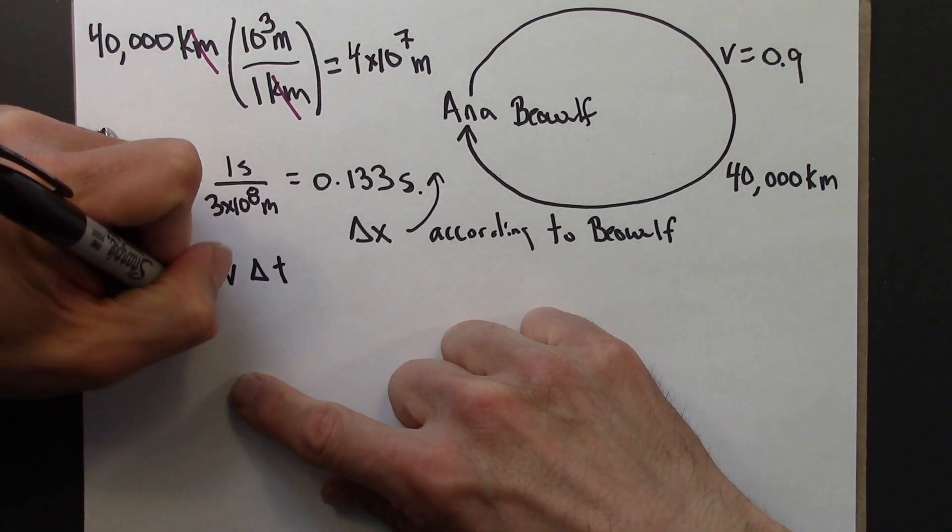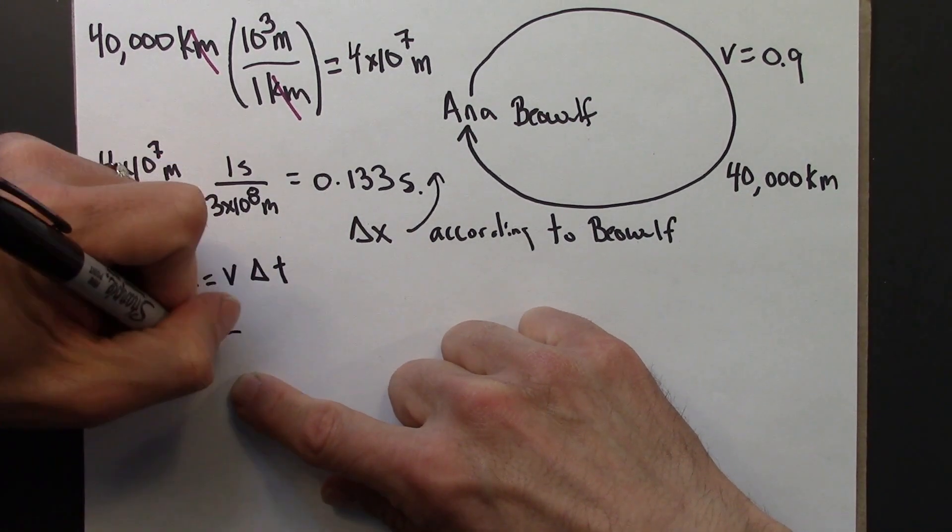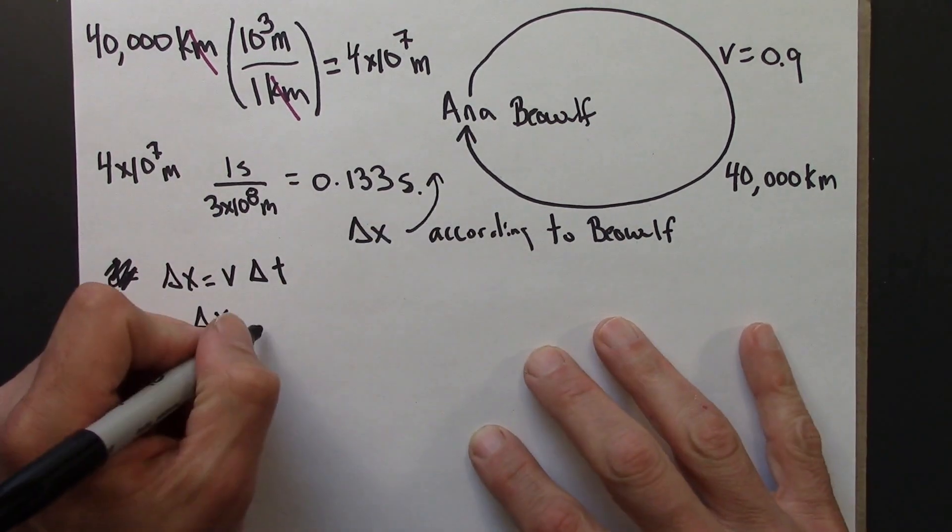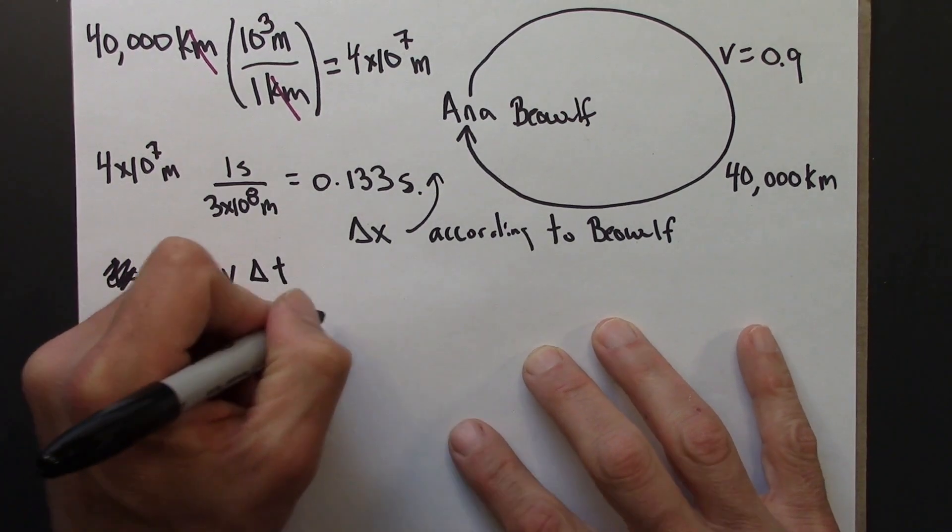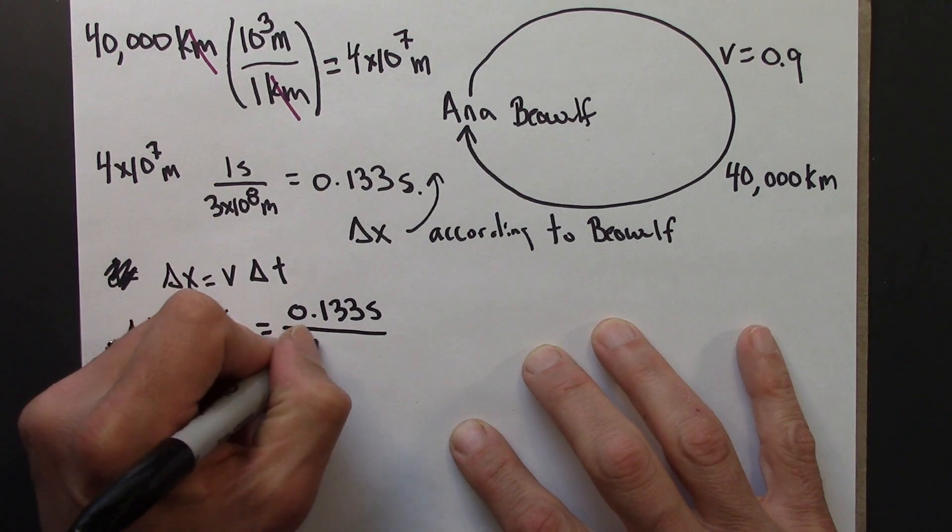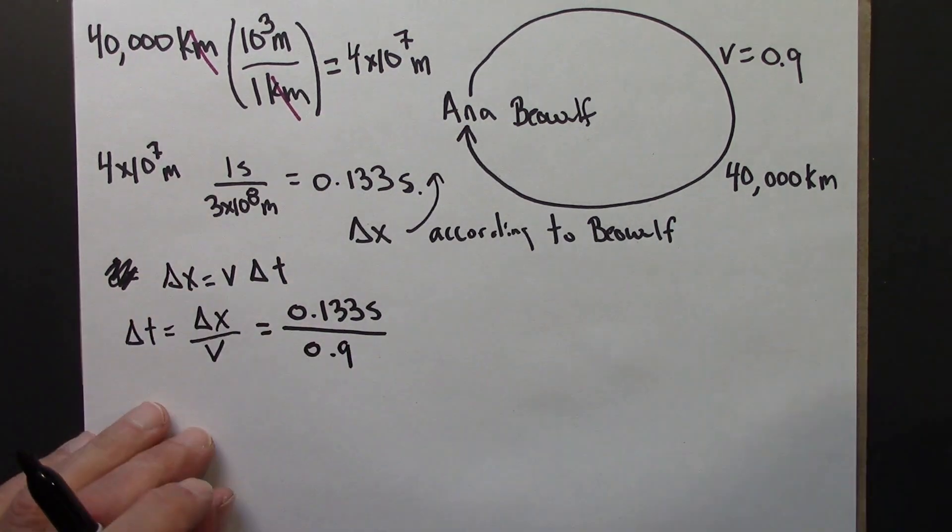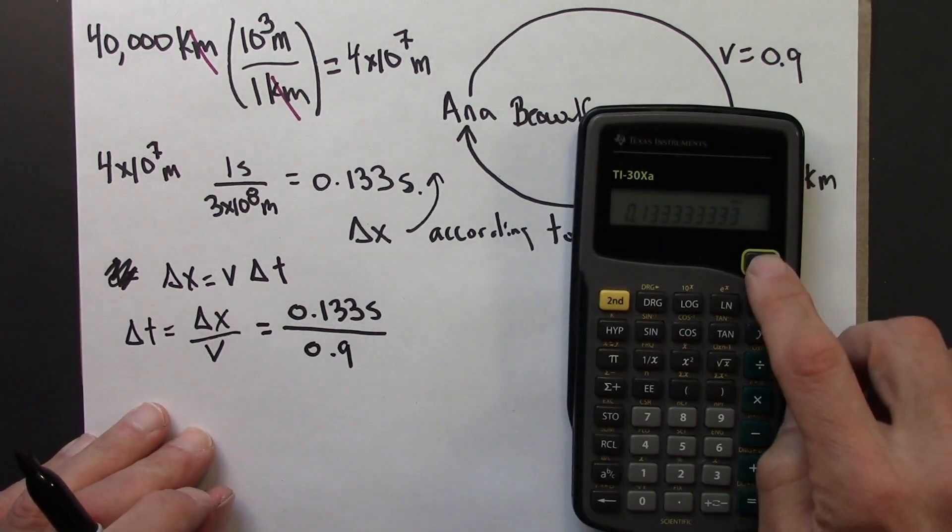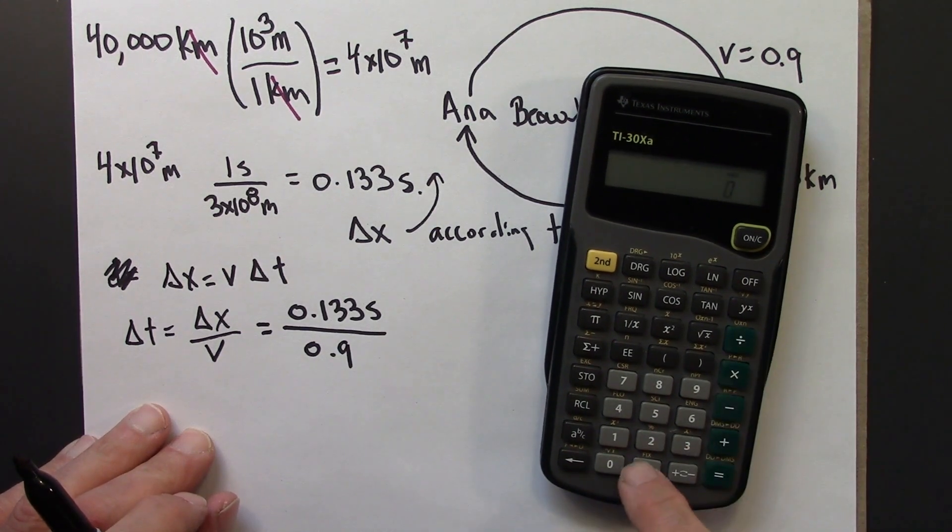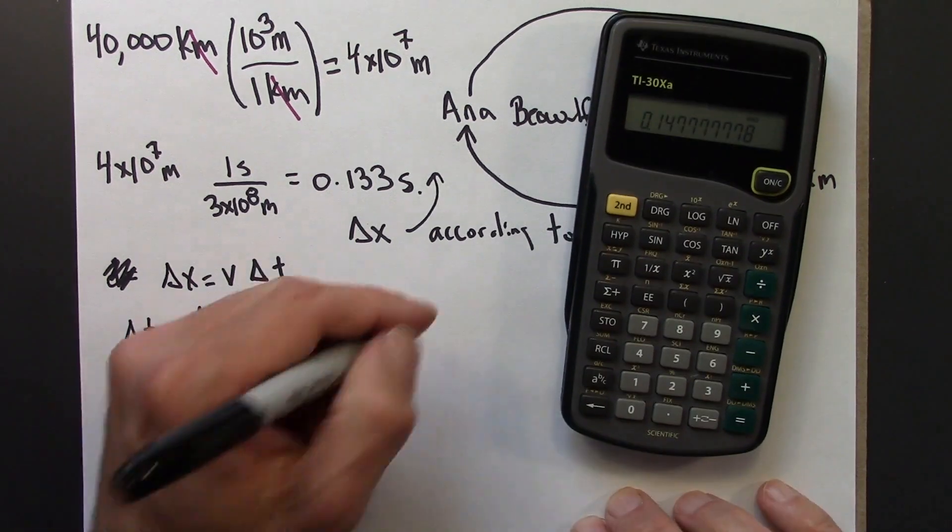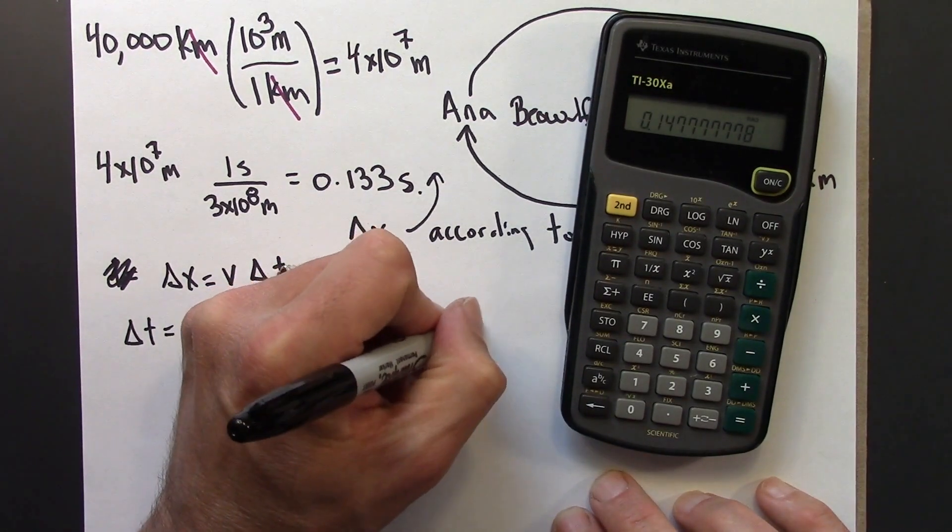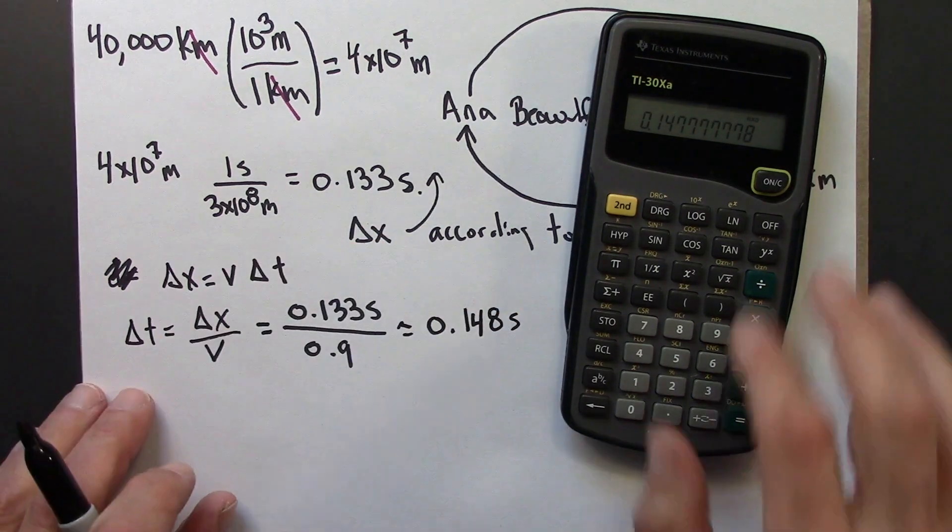Delta x we just found, that's 0.133 seconds. The speed is 0.9. So 0.133 divided by 0.9 equals 0.148 seconds.